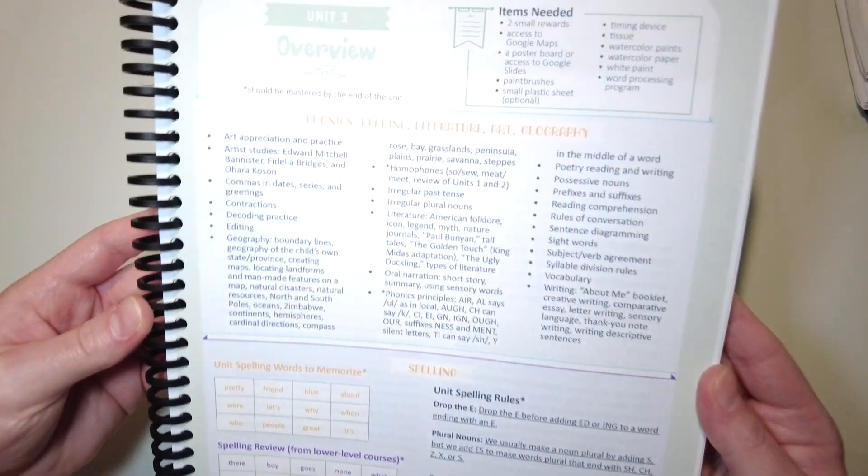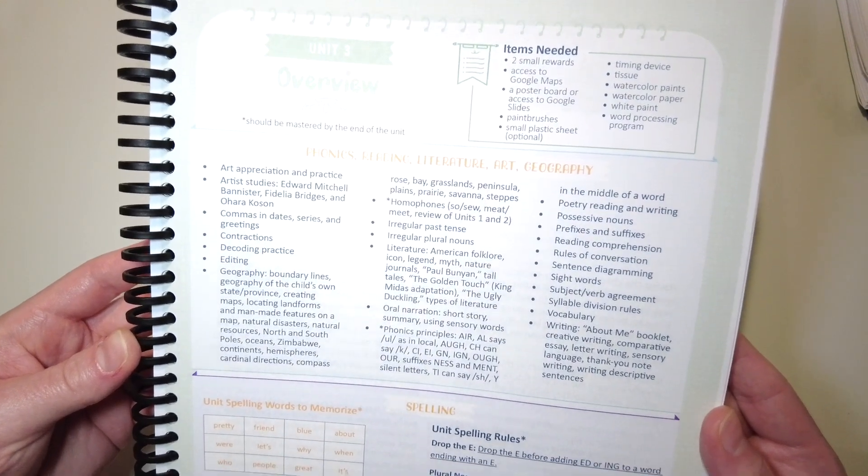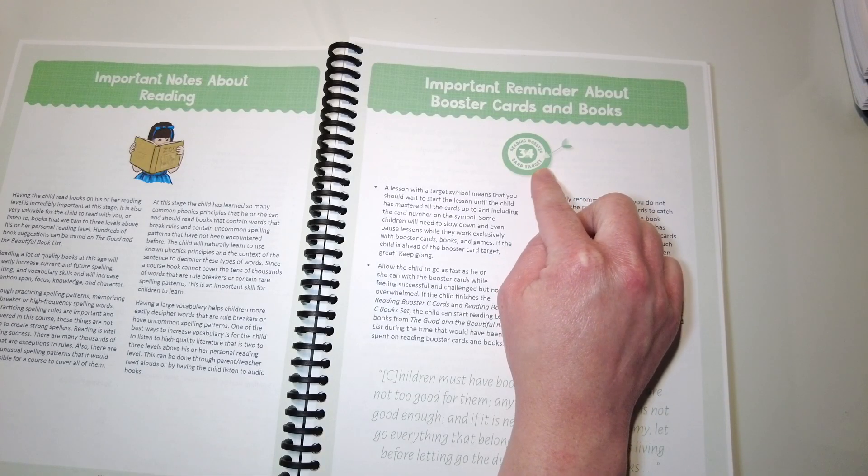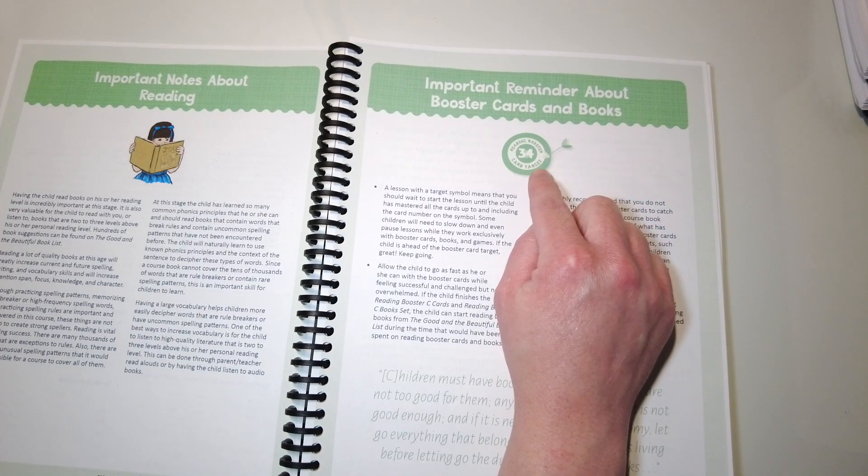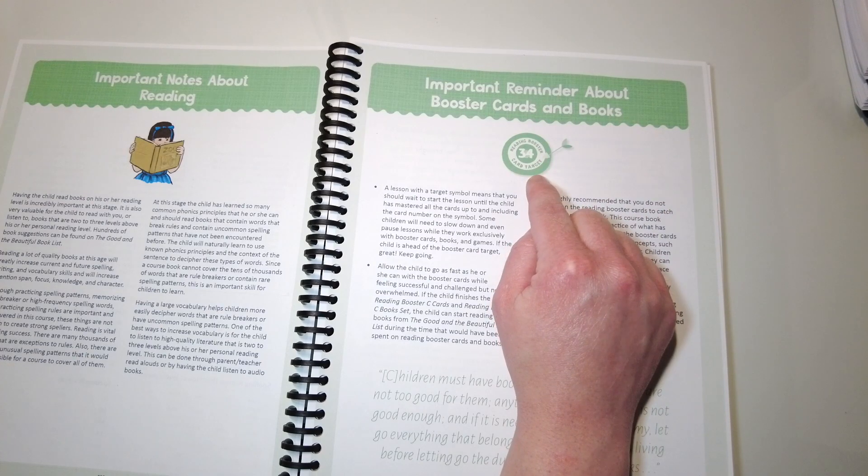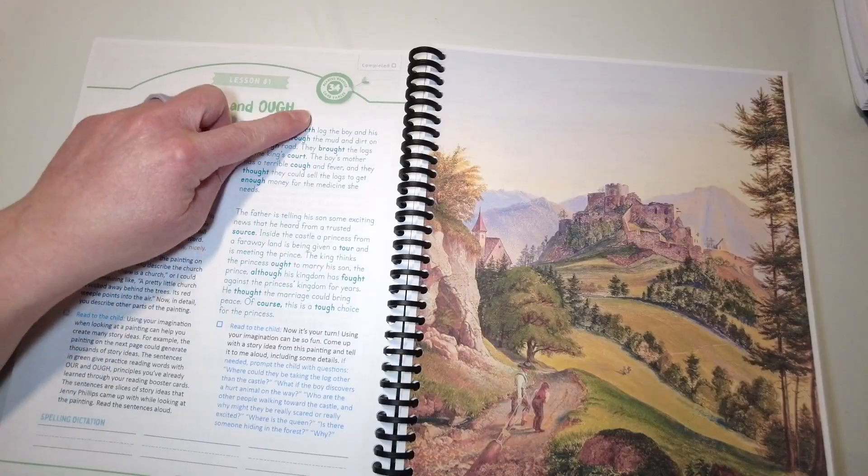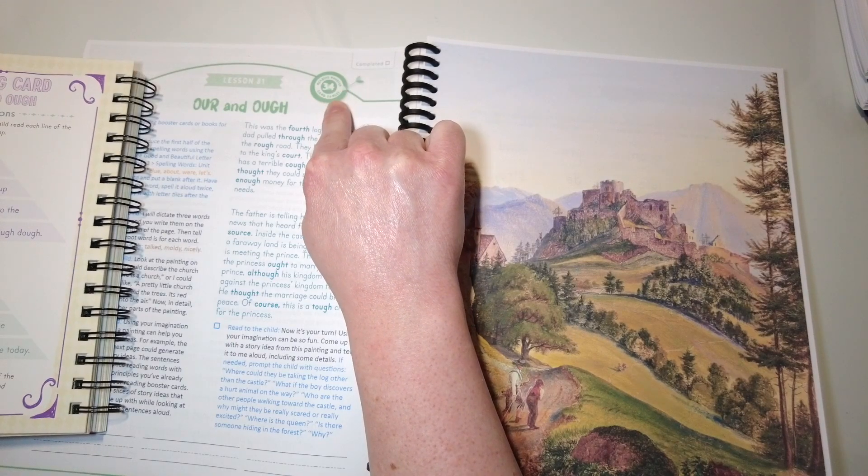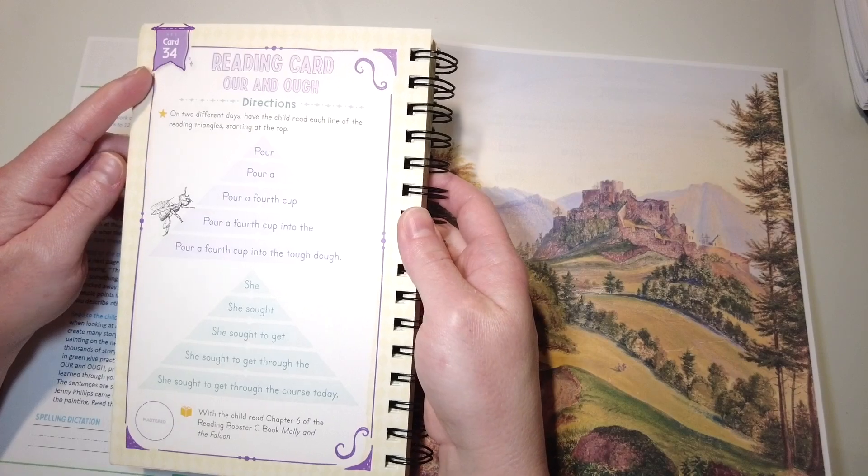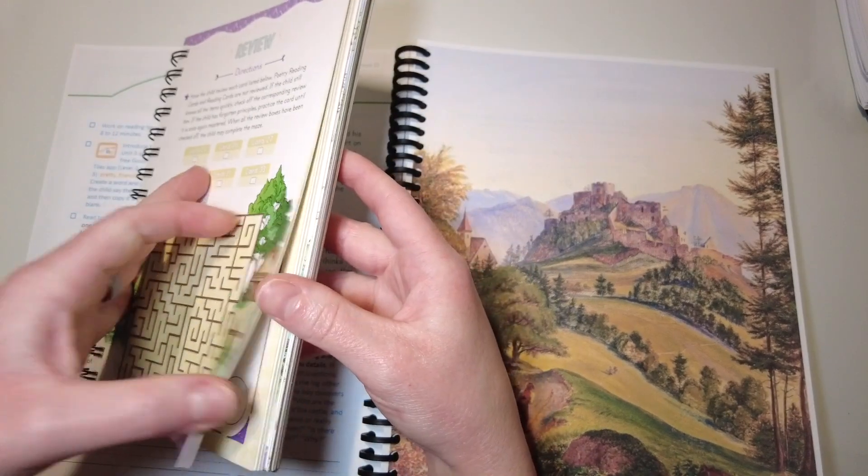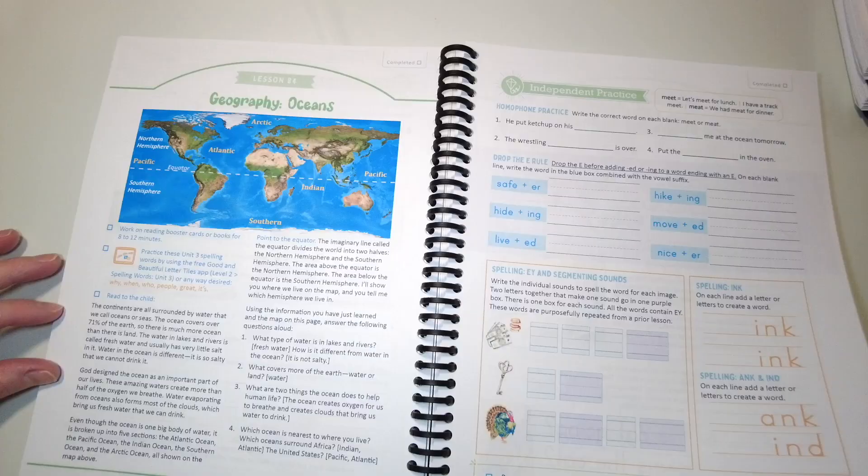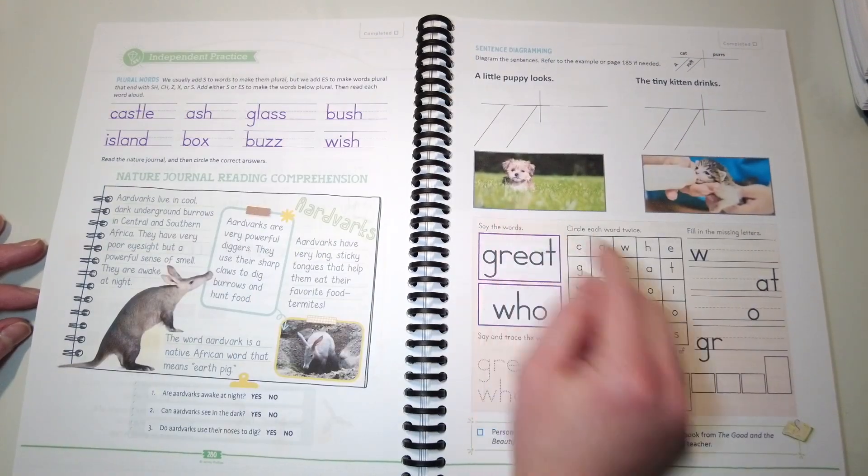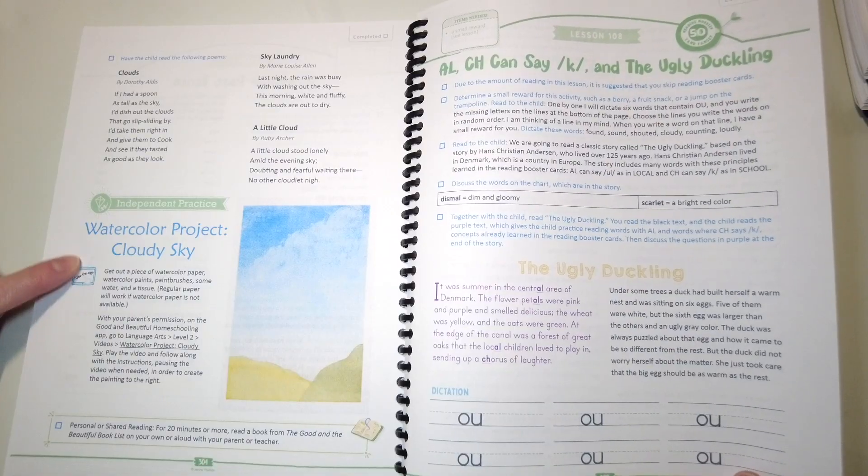Unit three overview. I don't know if I finished talking about the booster card targets. So when you see one of these on top of the lesson, they need to either be past that card number or have already completed it before they start the lesson, like right here. So to complete this lesson 81, she would need to have completed reading booster card 34 or be past it. So this card, she would need to have mastered this one already or be farther ahead in order to do this lesson.